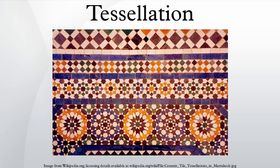In 1619, Johannes Kepler made one of the first documented studies of tessellations when he wrote about regular and semi-regular tessellations, which are coverings of a plane with regular polygons, in his Harmonix Mundi. Some 200 years later in 1891, the Russian crystallographer Fyodorov proved that every periodic tiling of the plane features one of 17 different groups of isometries. Fyodorov's work marked the unofficial beginning of the mathematical study of tessellations.